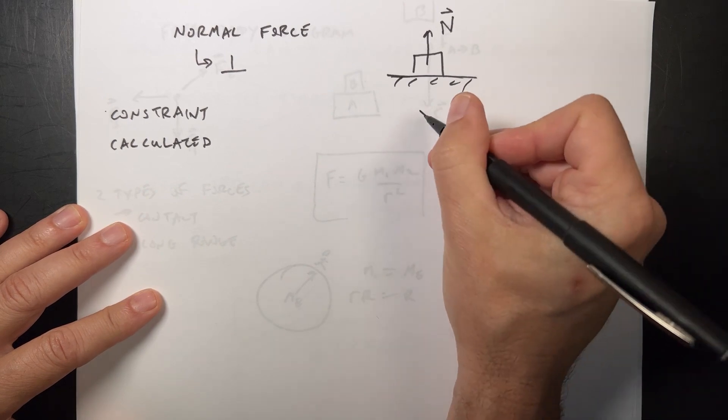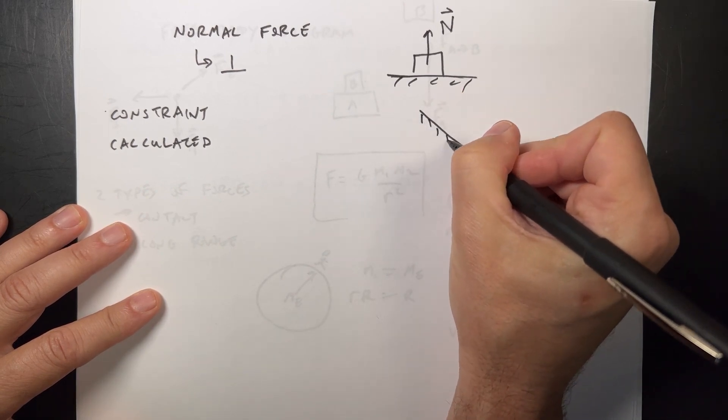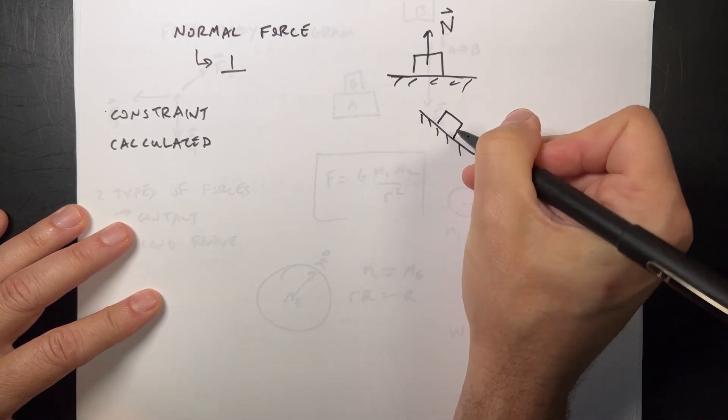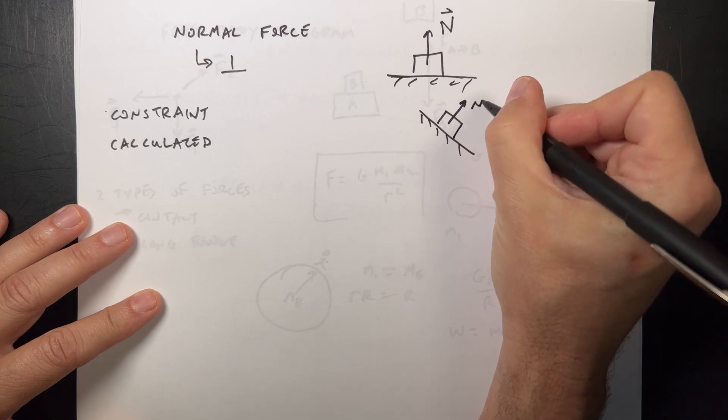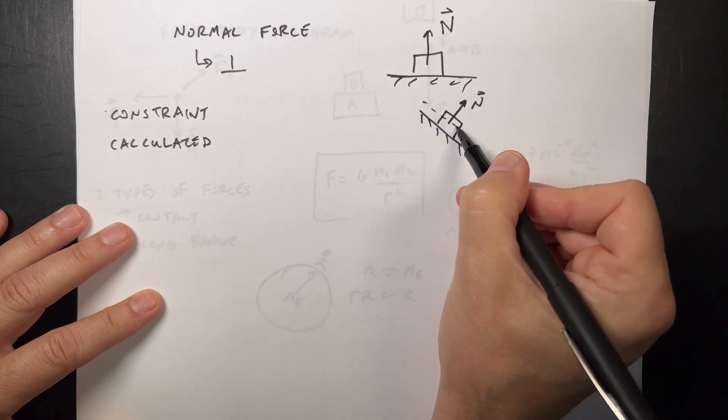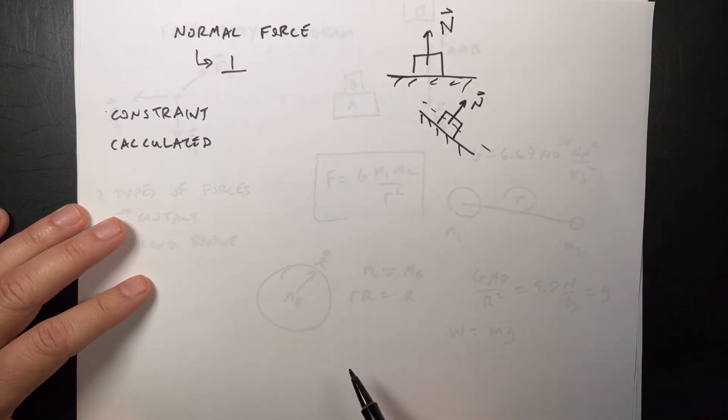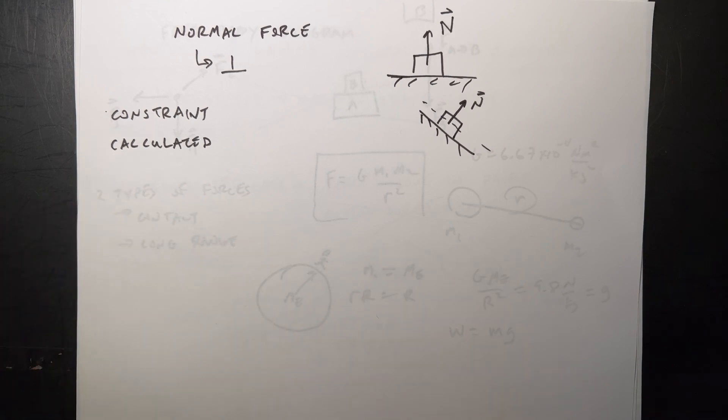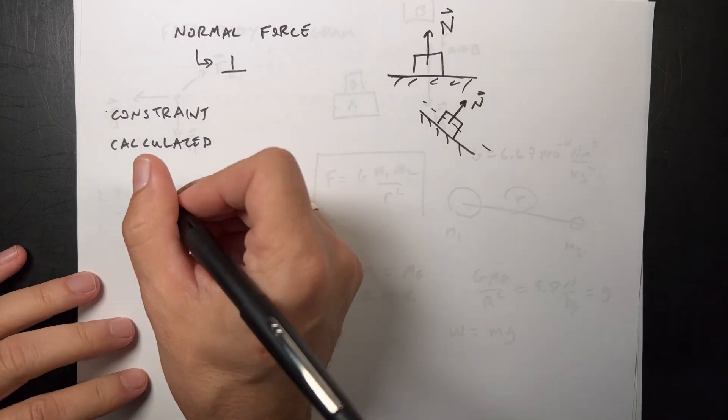If you have a tilted surface like this, this is a problem that a lot of people make mistakes on. If I have it like that, the normal force is this way, which is perpendicular to the surface. So it does not have to be up and it does not have to be equal to the weight, the gravitational force.